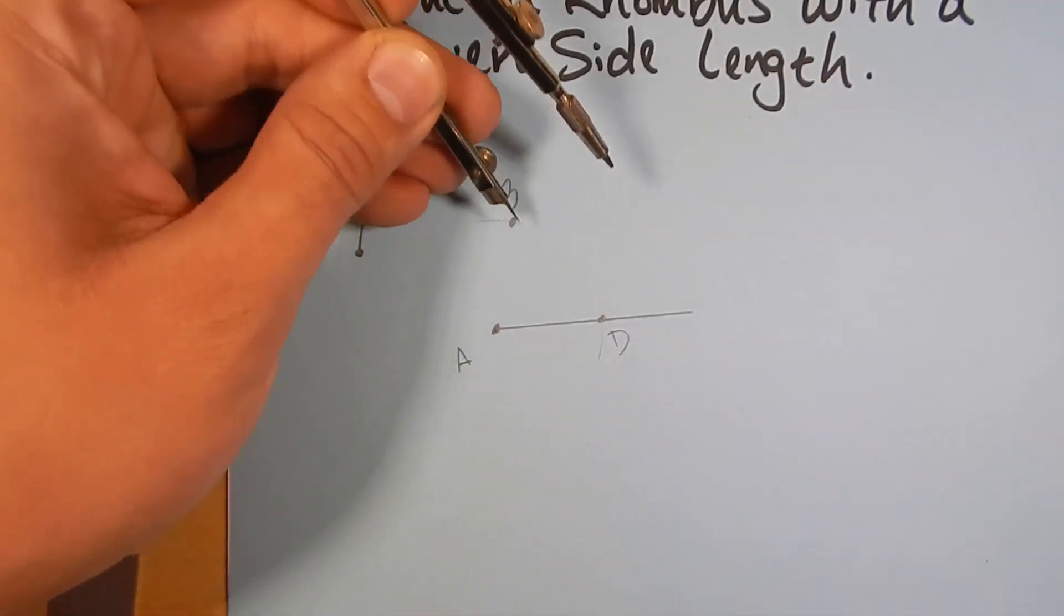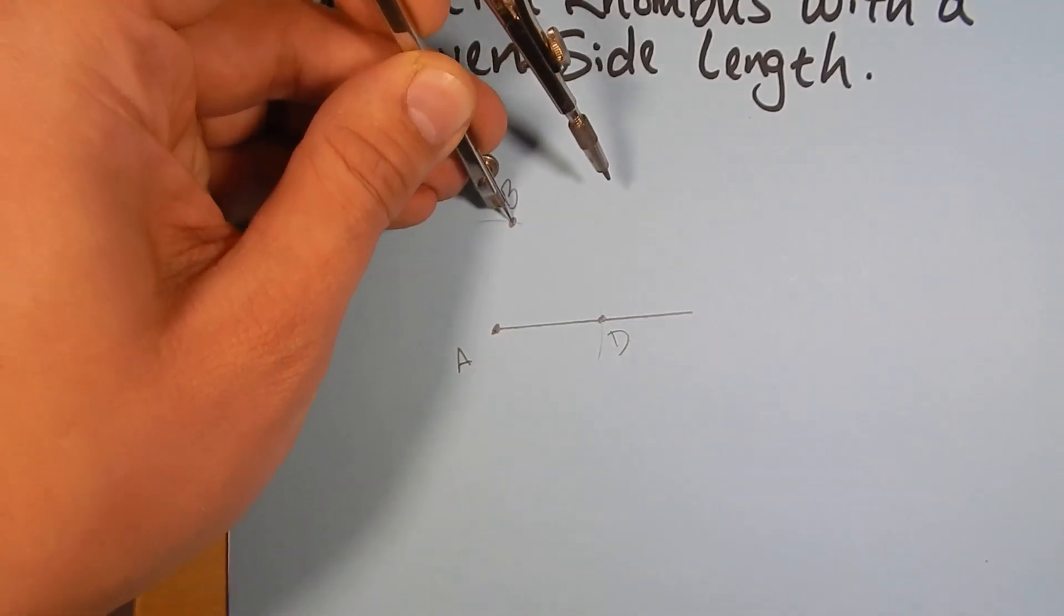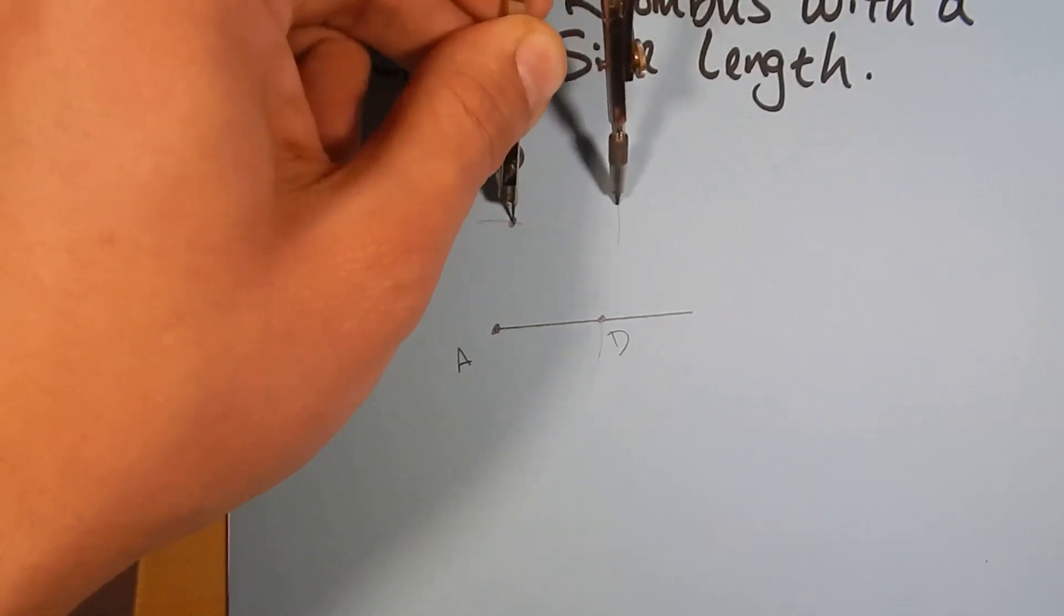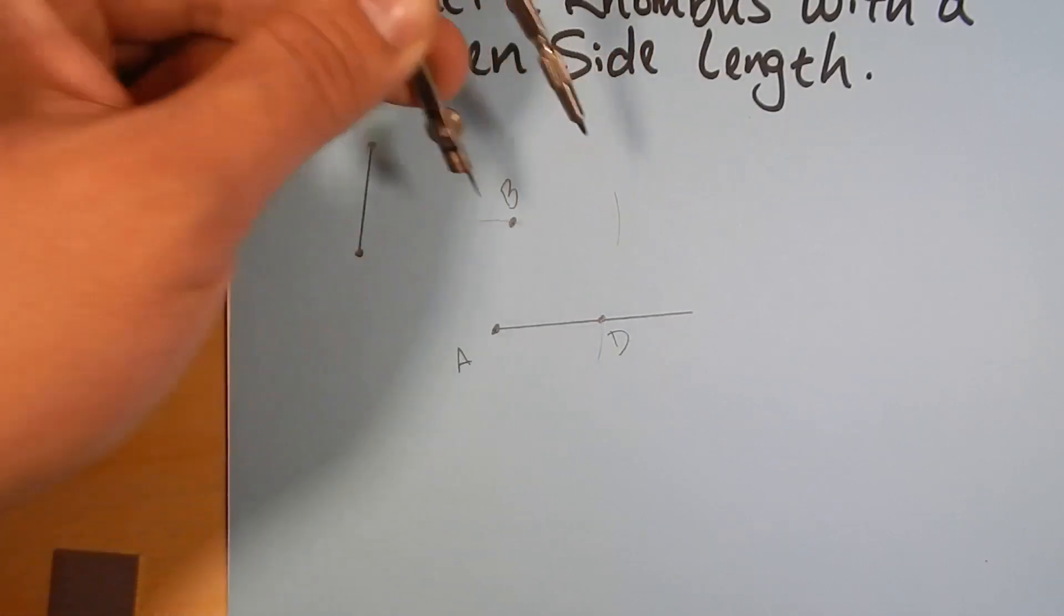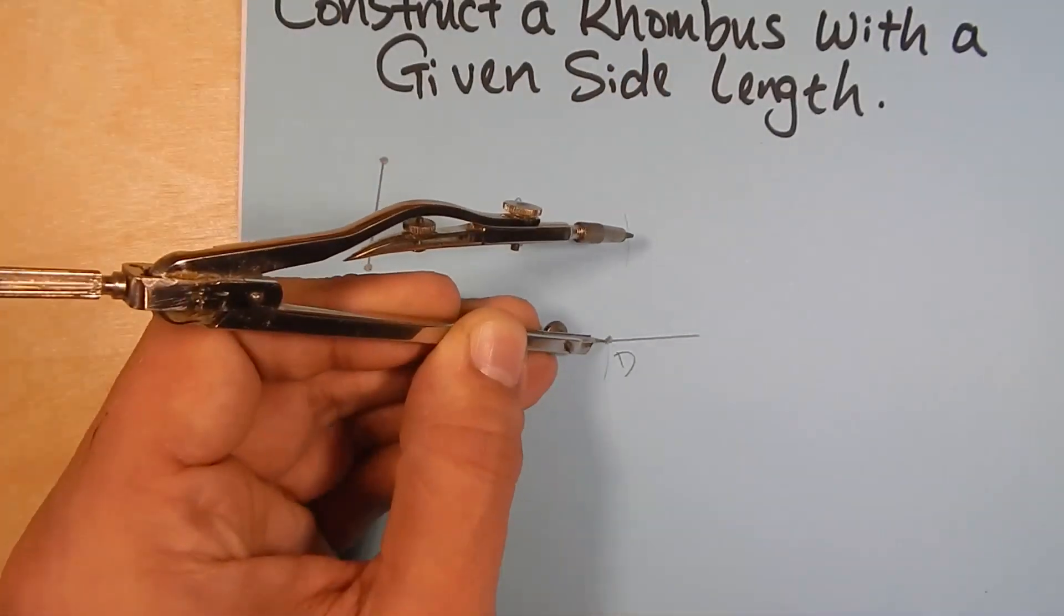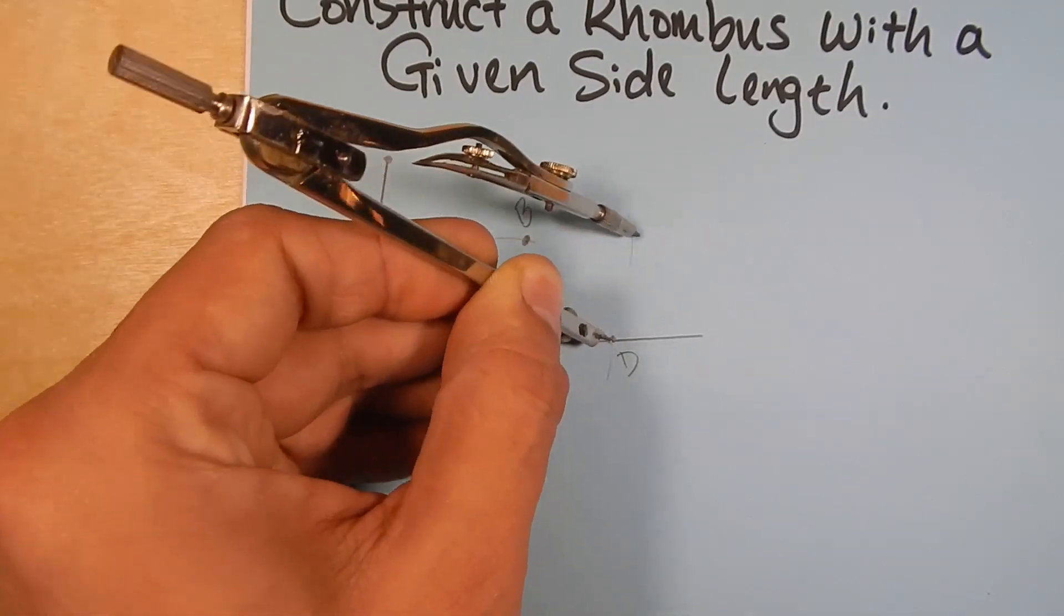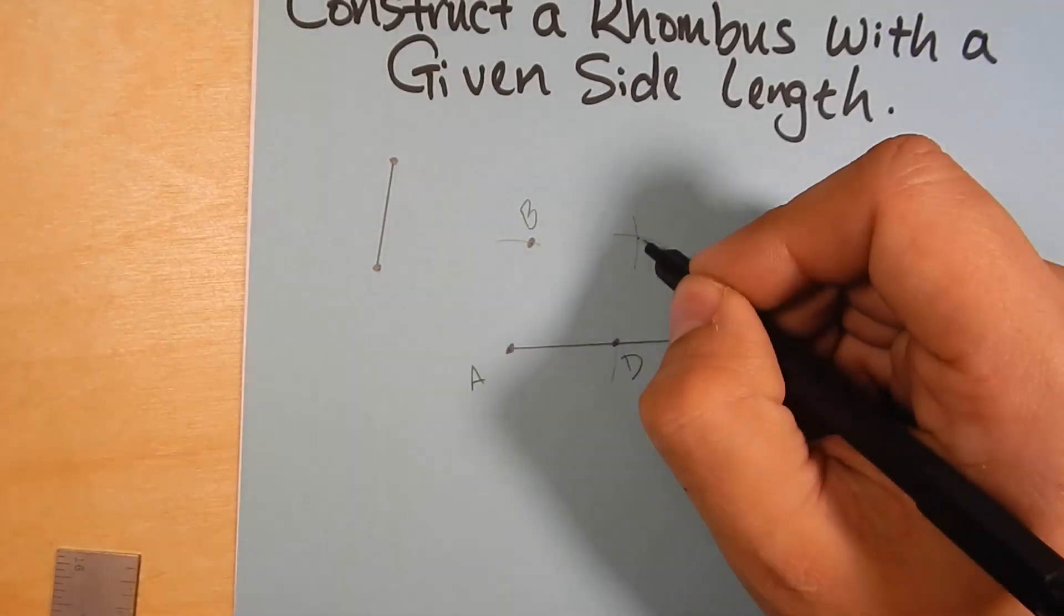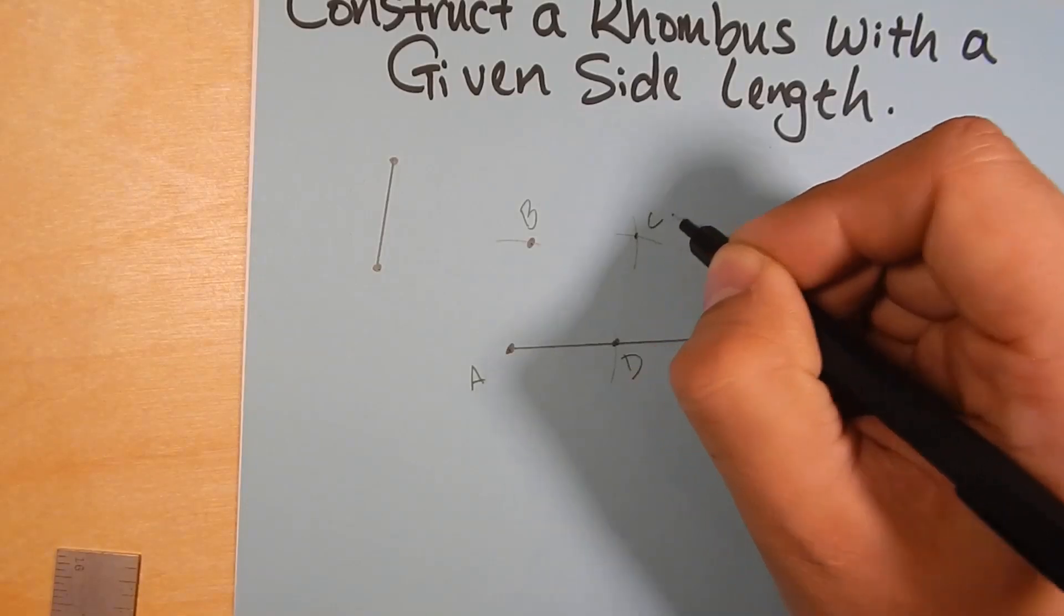Now we have point B, we have point D, we've got point A. We're going to take our compass. We're going to make an arc from B over into this blank space. And then we're going to make an arc from D that intercepts that. And this intersection here we're going to call point C.